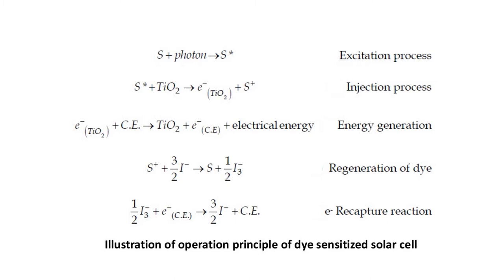The mechanism and chemical reaction equations are illustrated here. The first step is the excitation process where photons create excitons. The second is the injection process where electrons are created and holes are left behind. In the third process, electrical energy is generated. Then the regeneration of dye molecules occurs, and the electron recapture reaction finally completes the process.